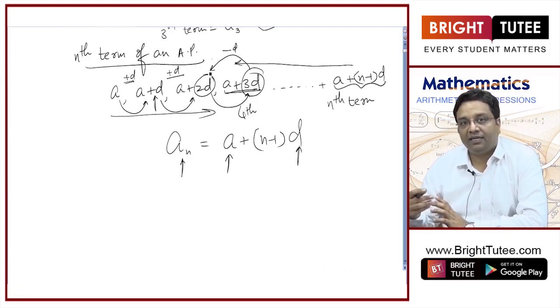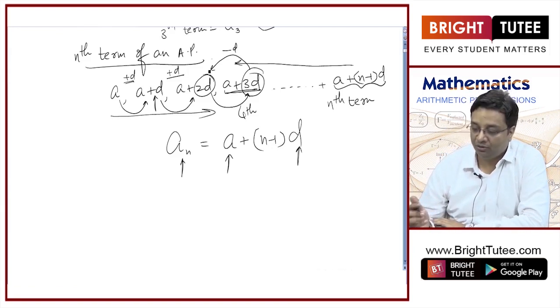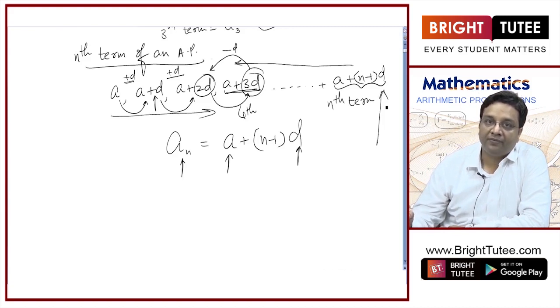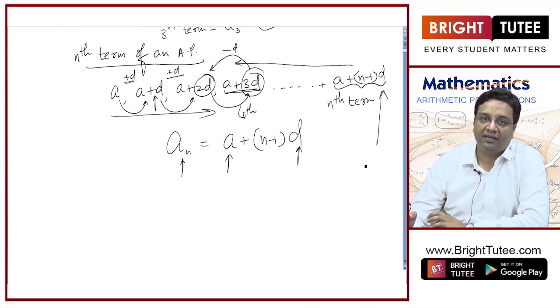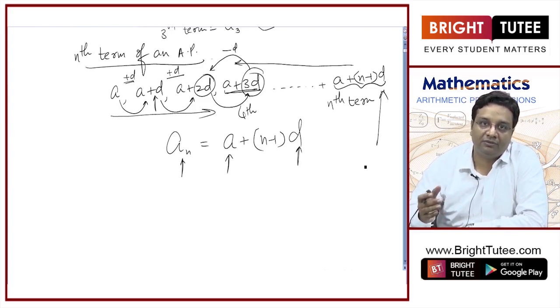If you are asked nth term from the end, you do not have to learn any new formula. What you can do is you can assume last term as your first term and common difference is minus D. We will look into it in great details when the question comes.